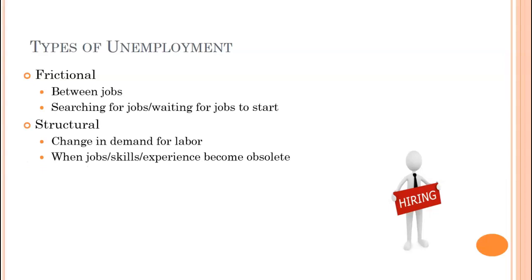The second is structural unemployment, which is devastating because your skills as they are simply are not needed — there's a change in demand for labor and your skills become obsolete. For example, if you know how to repair a CD-ROM drive, most computers no longer have those. This is why during the 2008-2009 Great Recession, many people went back to school so that when the recession ended their skills would be updated.